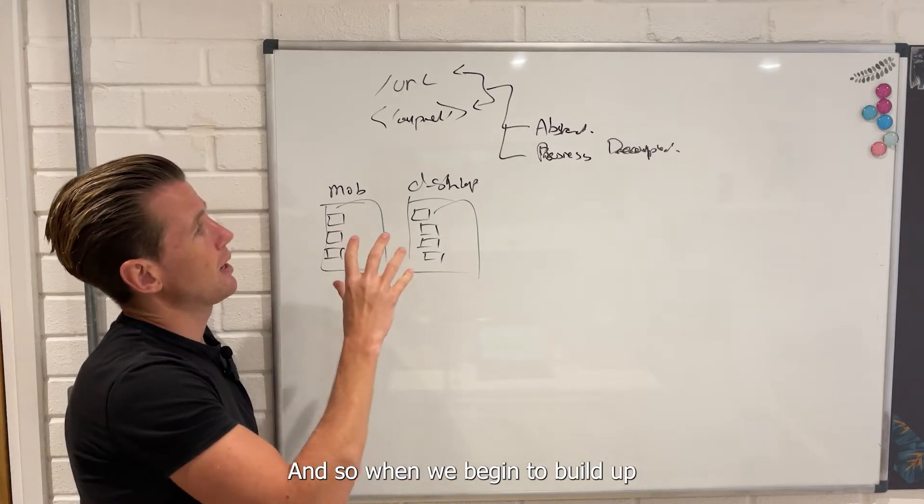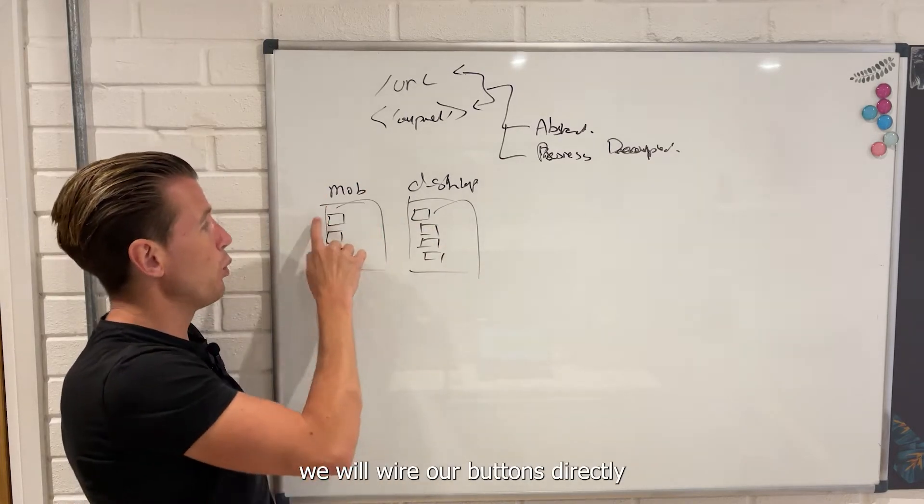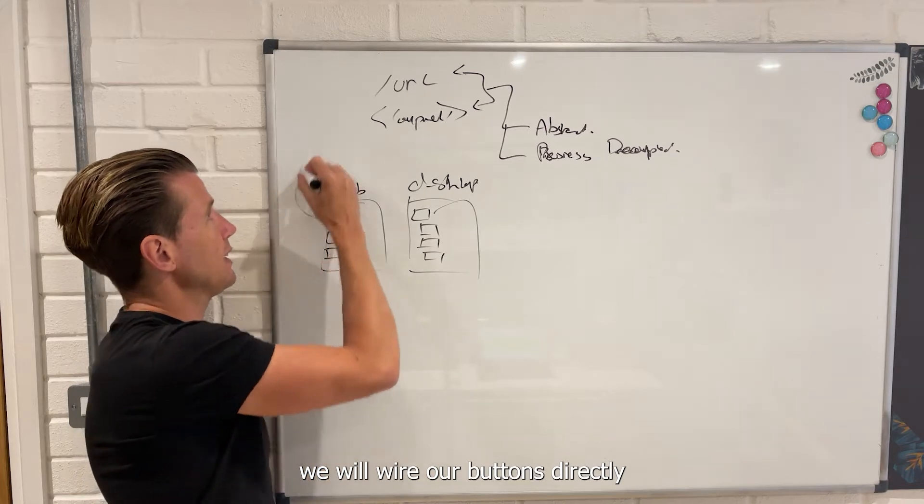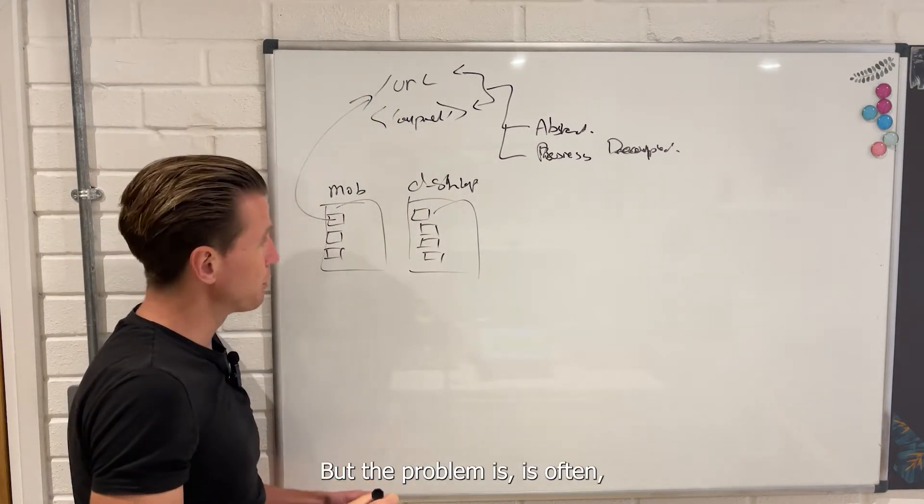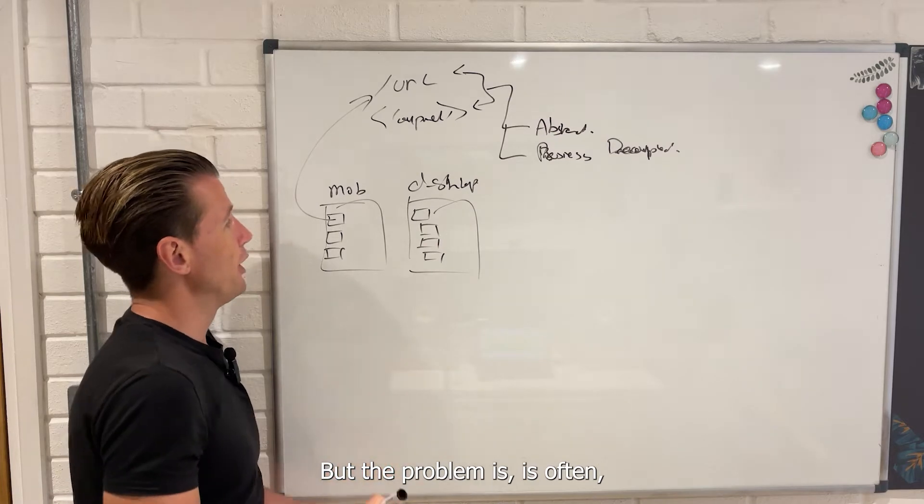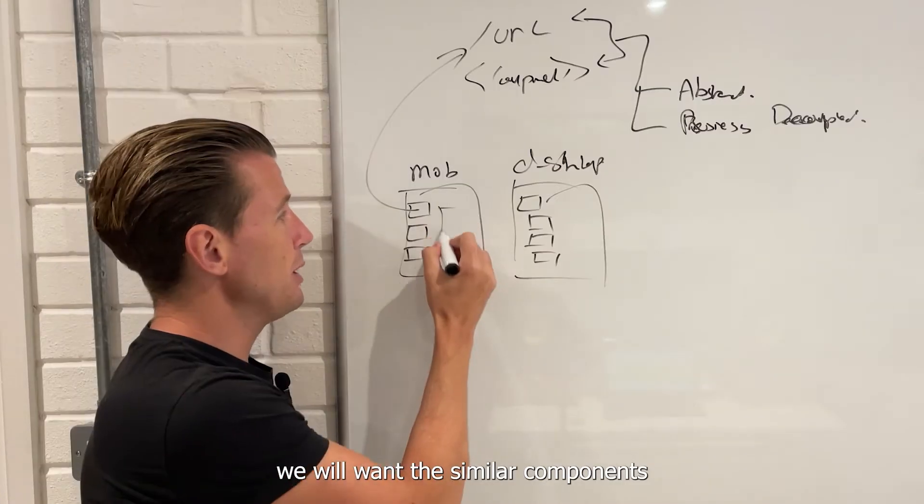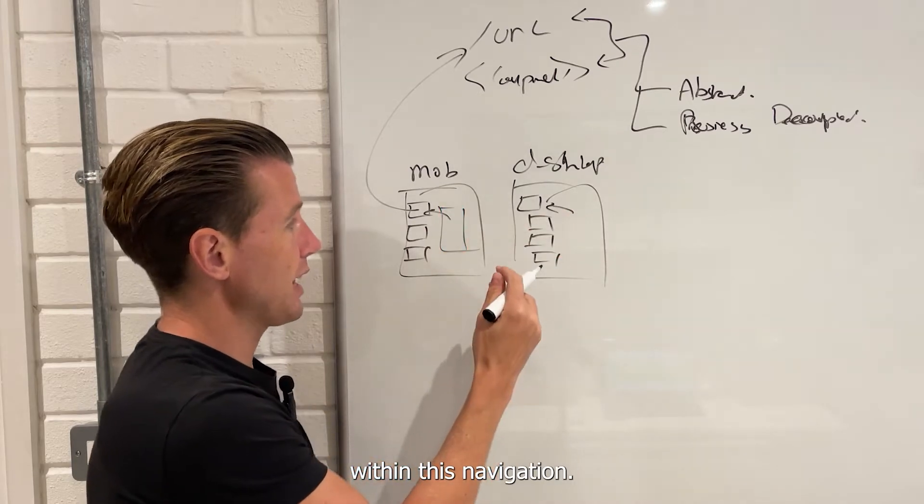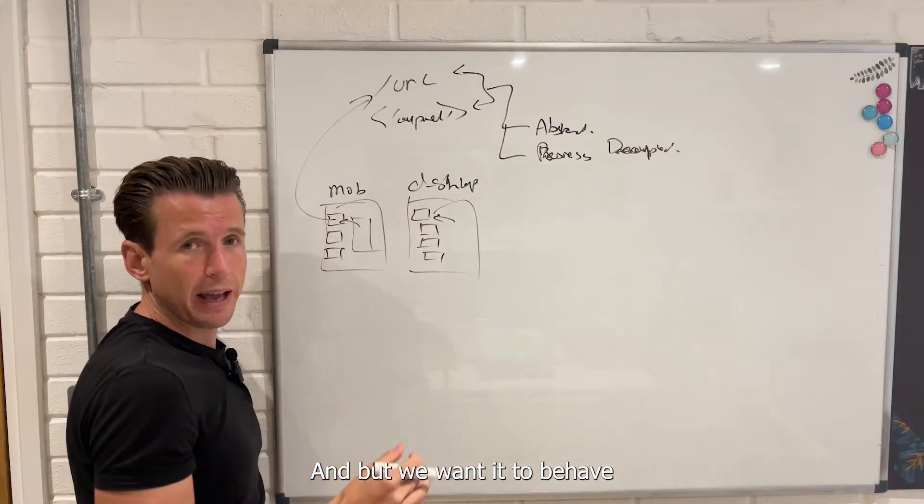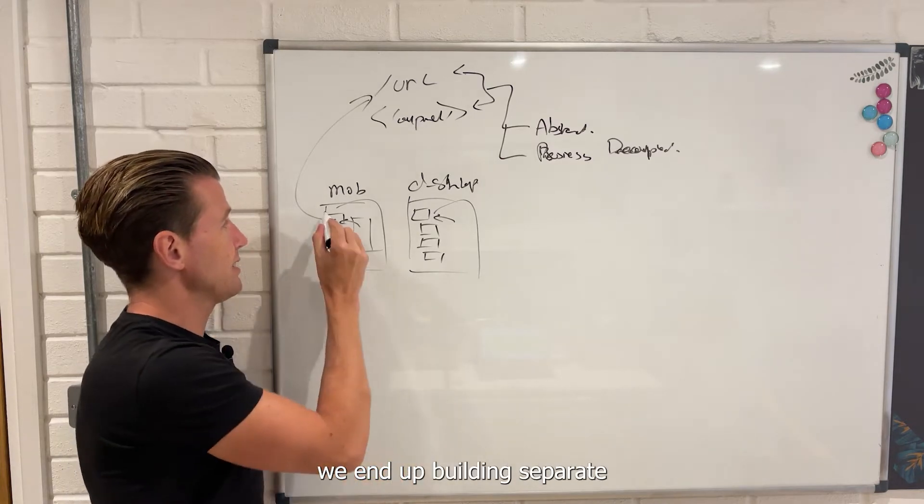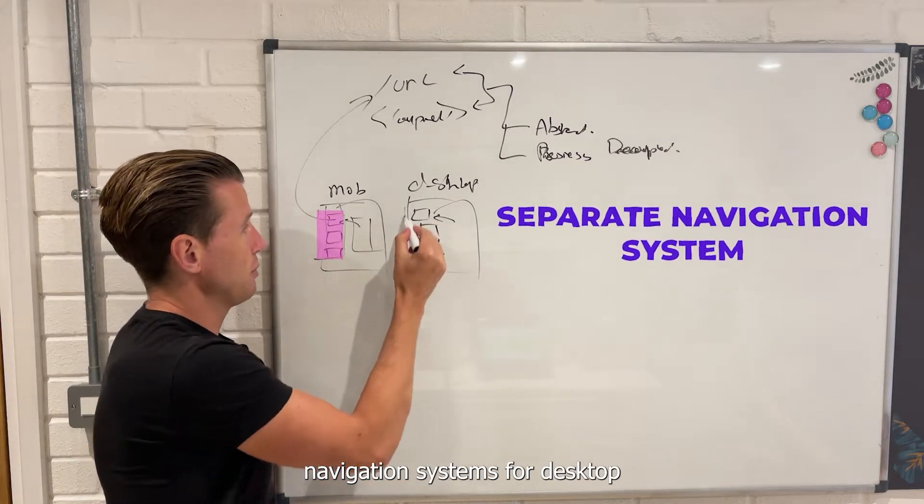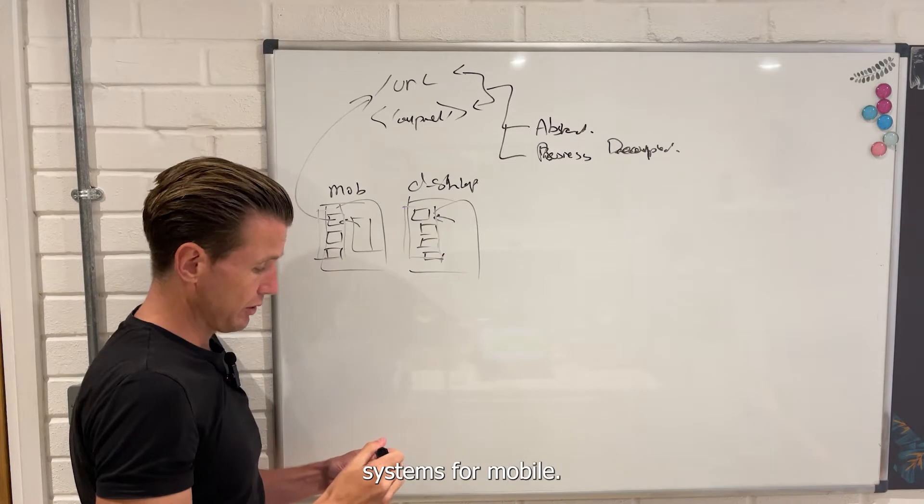When we begin to build our navigation systems, we will wire our buttons directly to some sort of URL, and then the URL will go in and show the components. But the problem is that often we will want the similar components at different places within this navigation, but we want it to behave in the same way across multiple systems.